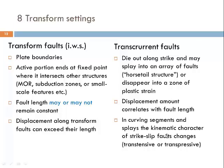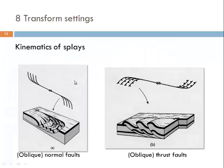Looking at splays: a strike-slip fault that fizzles out distributes its strain into a series of splays. These splays can curve away in two directions from a dextral strike-slip fault. In one case this results in a series of listric normal faults. If the curvature of the dextral strike-slip fault goes in the other direction, then we would produce a series of thrust faults — normally listric thrust faults — and we could even form duplex structures or imbricate fans associated with strike-slip faulting.